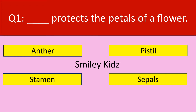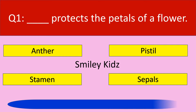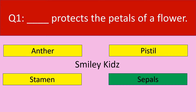Question number 1. Dash protects the petals of a flower. Options are: anther, pistil, stamen, sepals. Your time starts now. Your time is up. The correct answer is sepals. Sepals protect the petals of a flower.